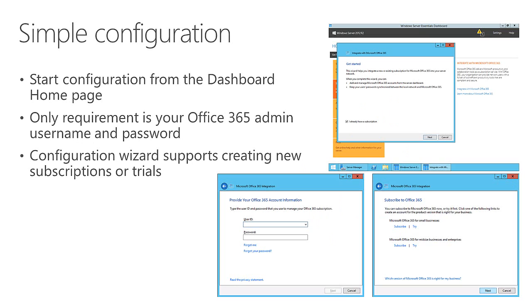Getting up and going with Office 365 integration is very straightforward. You start from the home page of the dashboard, where there are a number of add-ins and online services you can initiate, and Office 365 integration is one of those. The only thing you really need is your administrator username and password for the Office 365 subscription. If you don't already have one, you can set up a trial or subscribe. That's the only information the integration needs to communicate between the Essentials server and your Office 365 subscription.